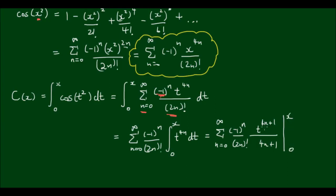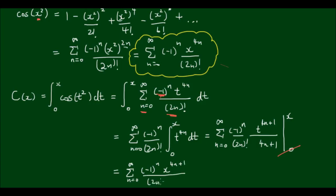Notice that this is an odd function because all we have is odd powers — regardless of what n is, t always has an odd power. This means that when we substitute 0 for the lower bound, the lower bound equals zero and disappears. The final result is simply the infinite sum of negative 1 to the power of n times x to the power of 4n plus 1, all over 2n factorial times 4n plus 1. And that is the explicit form of the integral of cos(x²).